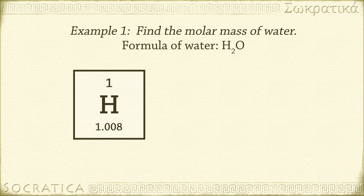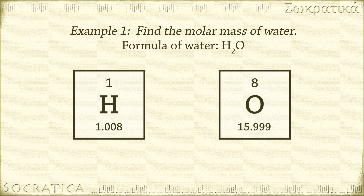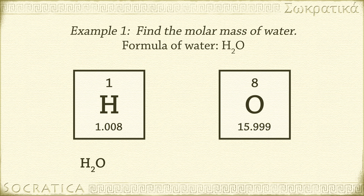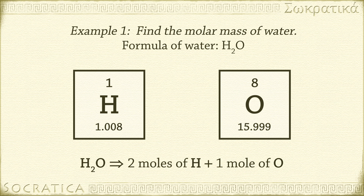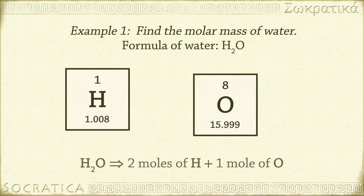One mole of hydrogen atoms equals 1.0 grams of hydrogen — I got that from the periodic table. We usually go to one decimal place for these calculations. One mole of oxygen atoms equals 16.0 grams of oxygen, again from the periodic table. The molecular formula of water is H₂O, which tells us there are two moles of hydrogen atoms and one mole of oxygen atoms in one mole of water molecules. Let's add that all up.